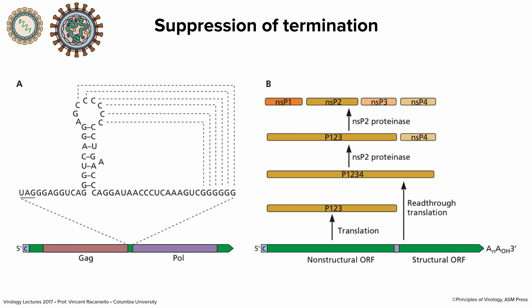In alphaviruses, a capped message is initially translated to produce a protein P1-P3. There's a stop codon at the end, but about 10% of the time a normal tRNA misreads it, producing a longer protein. The additional portion, NSP4, is the viral RNA polymerase. You don't need much of it because it's catalytic, but read-through translation produces it. These are two examples of how suppression can expand the coding capacity of a genome.